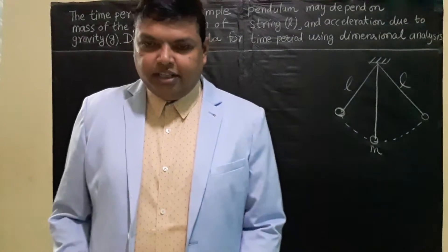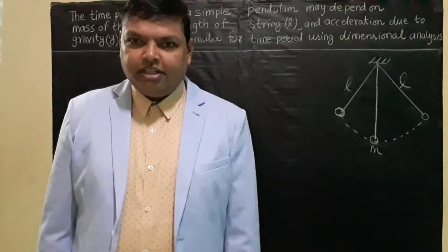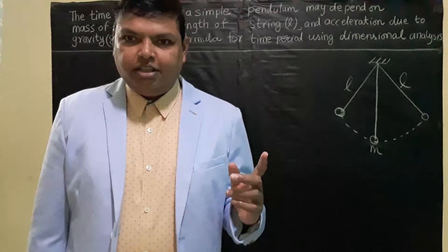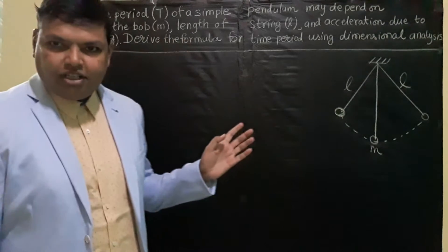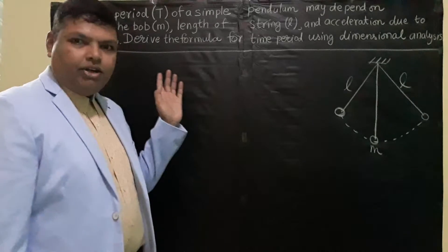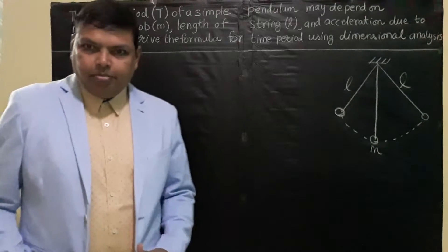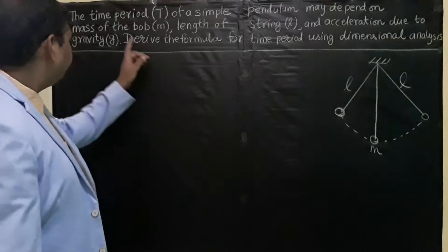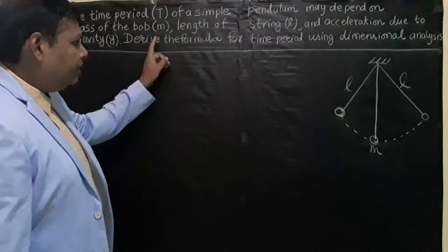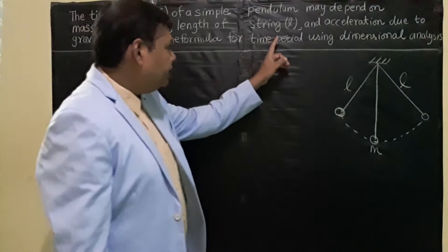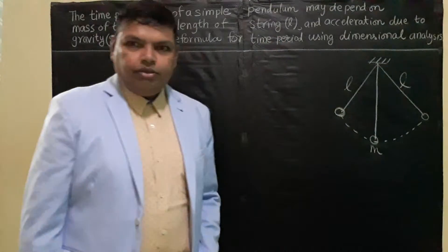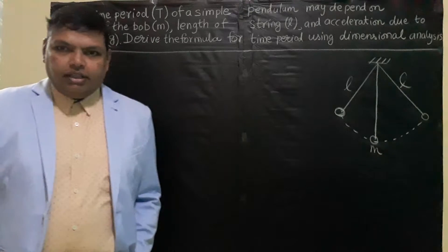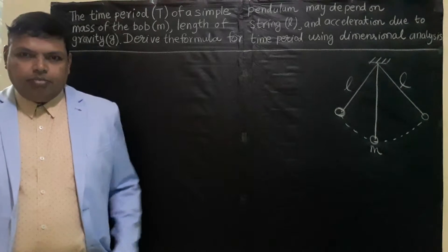Hello students. In this video we will discuss about the method of dimensional analysis for deriving any formula. As you can see, one question here — the time period of a simple pendulum may depend on three factors: the mass of the bob M, the length of the string L, and the acceleration due to gravity G. We have to derive the formula for the time period of this simple pendulum using dimensional analysis.